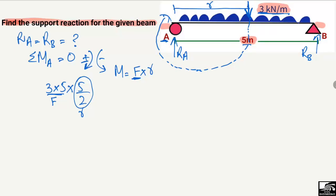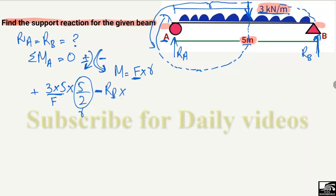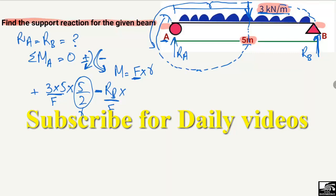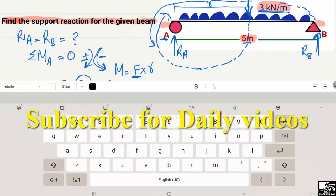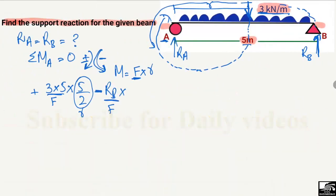R_B is acting upward by our sign assumption, and it will produce an anti-clockwise moment around point A. Due to its anti-clockwise direction, it is taken as negative, so it will be minus R_B. The moment arm for R_B is the distance from R_B to point A, which is 5 meters. So the summation of all moments at point A equals zero.